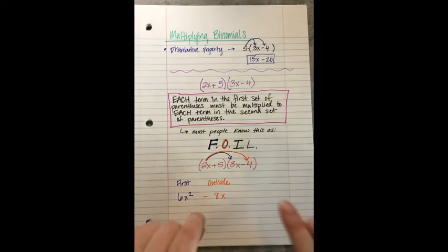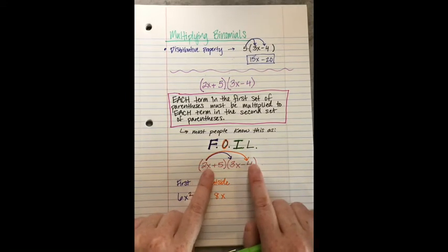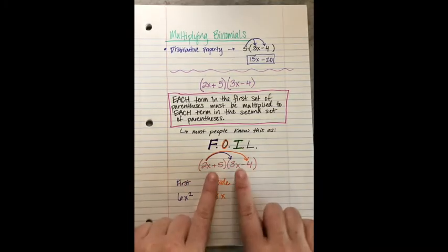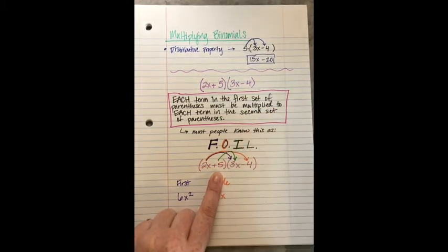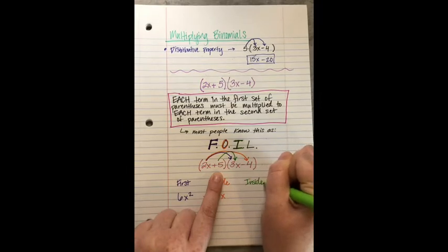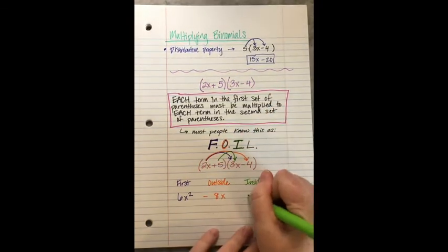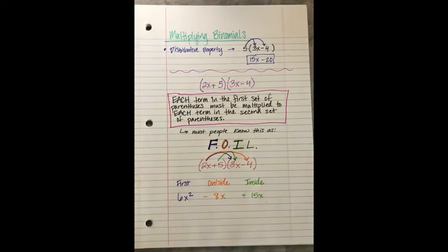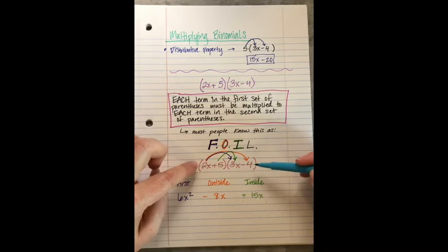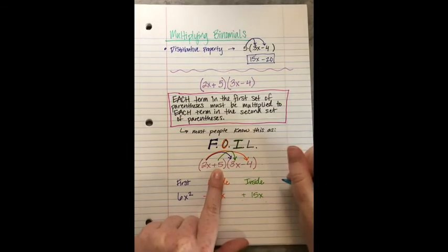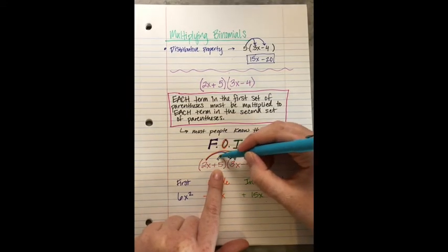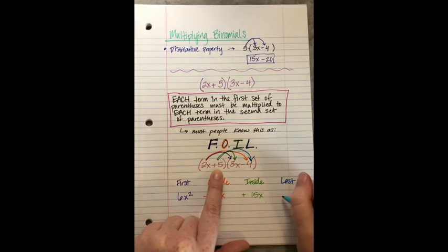We had First, we had Outside — what's the opposite of outside? Inside. So I stands for Inside: multiply the terms towards the inside of the parentheses. That's positive 5 times 3x, which is positive 15x. And the L stands for Last — the opposite of first. So we take 5 times negative 4, which is negative 20.